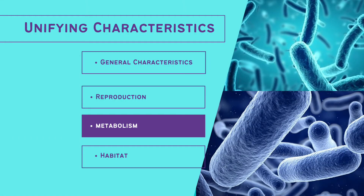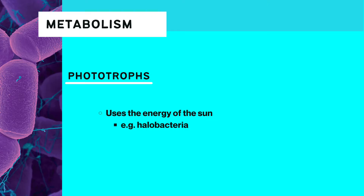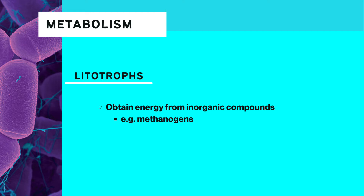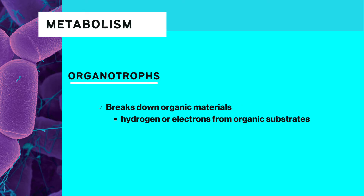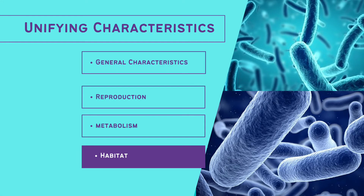Next, we have lithotrophs, which obtain energy from inorganic compounds such as sulfur or ammonia. One example of this is methanogens. And lastly, we have organotrophs, which break down organic materials and use hydrogen or electrons from organic substrates.